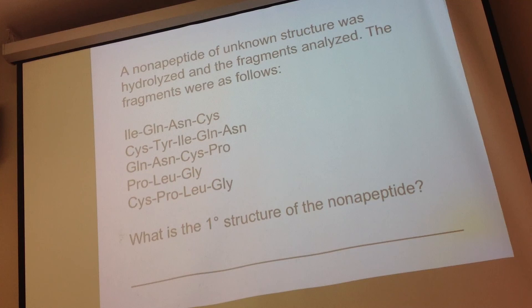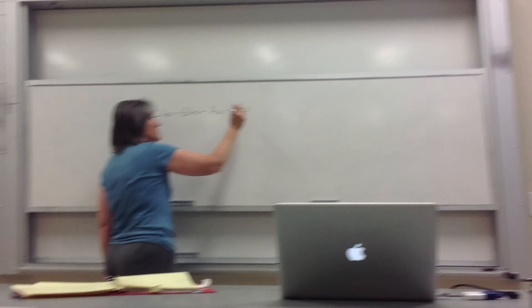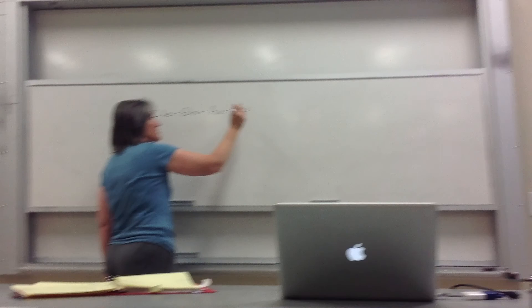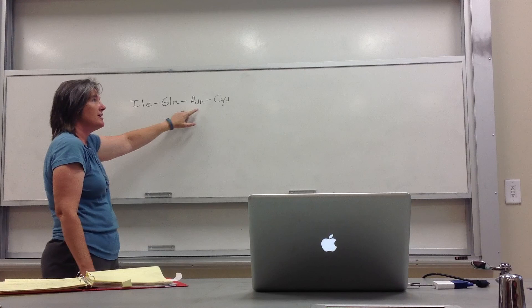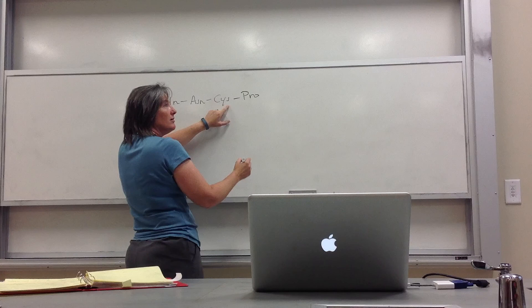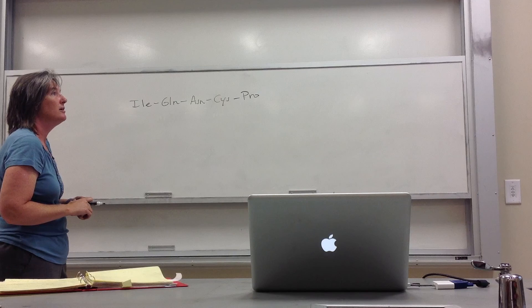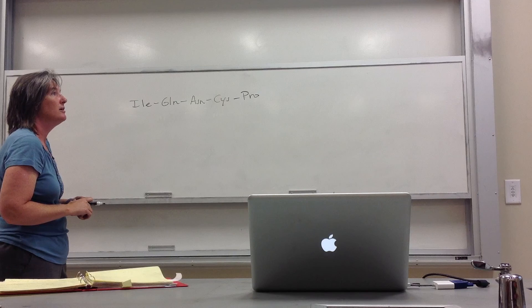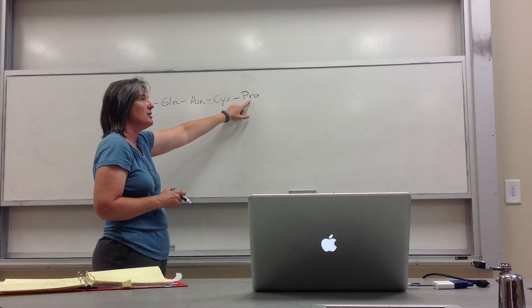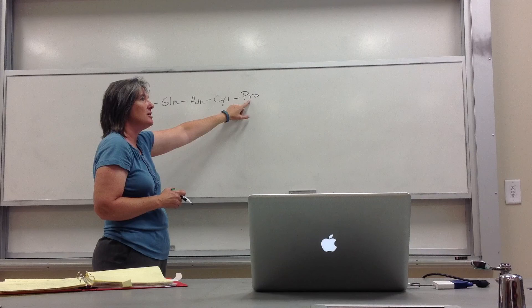Let's work through the nonapeptide example. Fragment one: Ile-Gln-Asn-Cys. Looking at the fragments, the third one down overlaps: Cys-Gln-Asn-Cys. Looking at the bottom fragment: Cys-Pro-Leu-Gly — that Cys connects them. And Pro-Leu-Gly appears in fragment four. Looking at fragment two: Ile-Gln-Asn and Tyr-Cys are the back part. Once you assemble all the overlapping pieces, you get the full nine-residue sequence. It's not that bad — it's kind of fun.